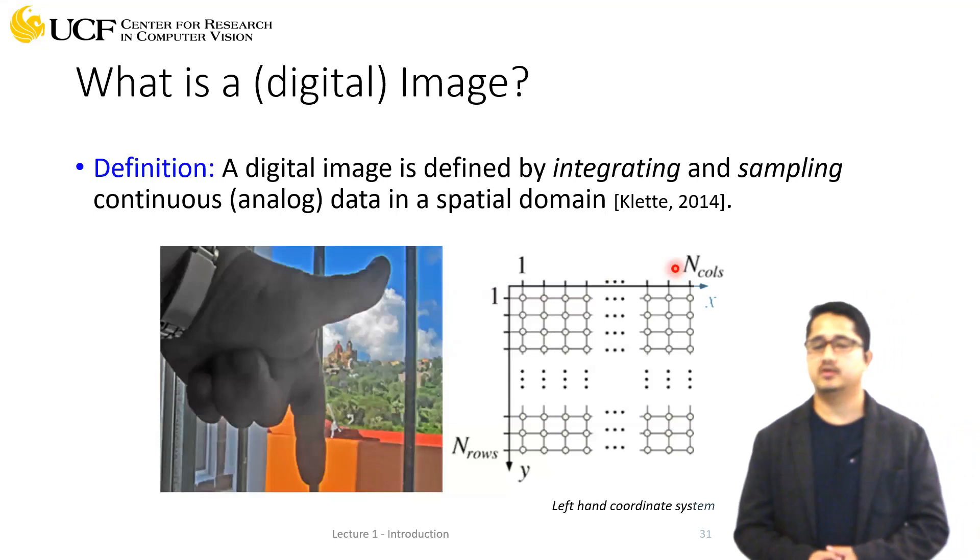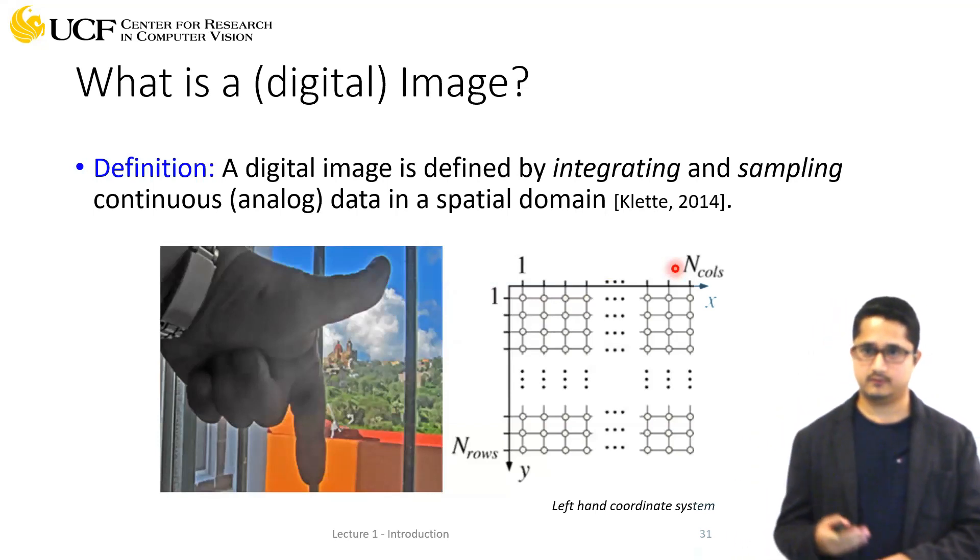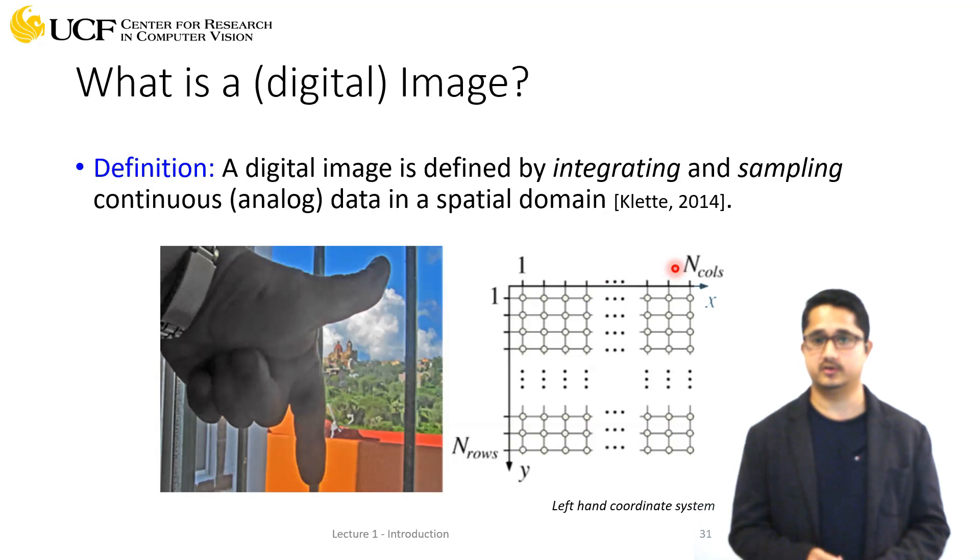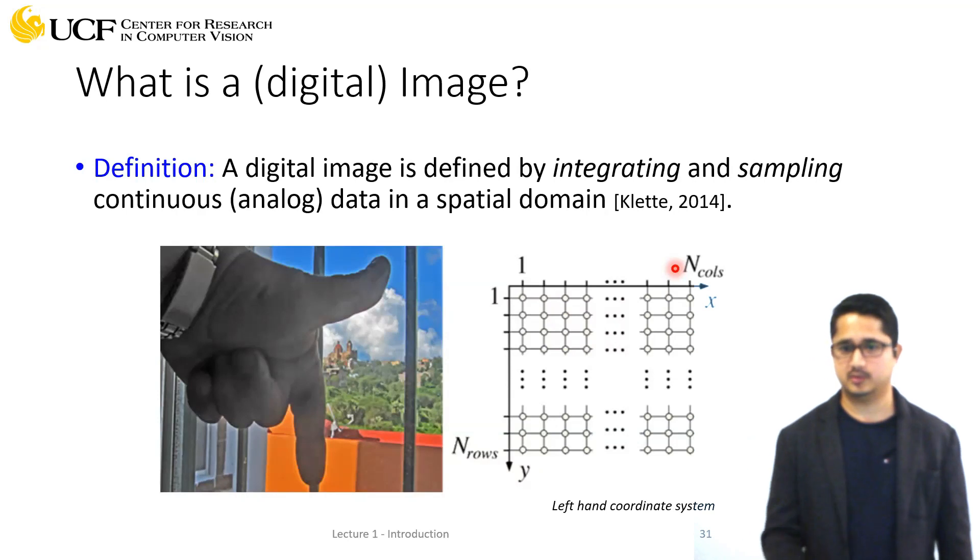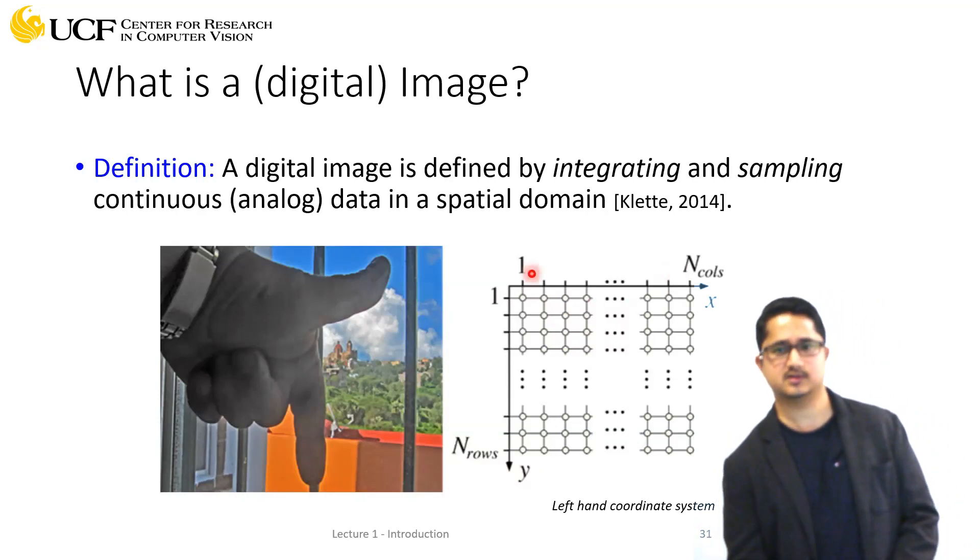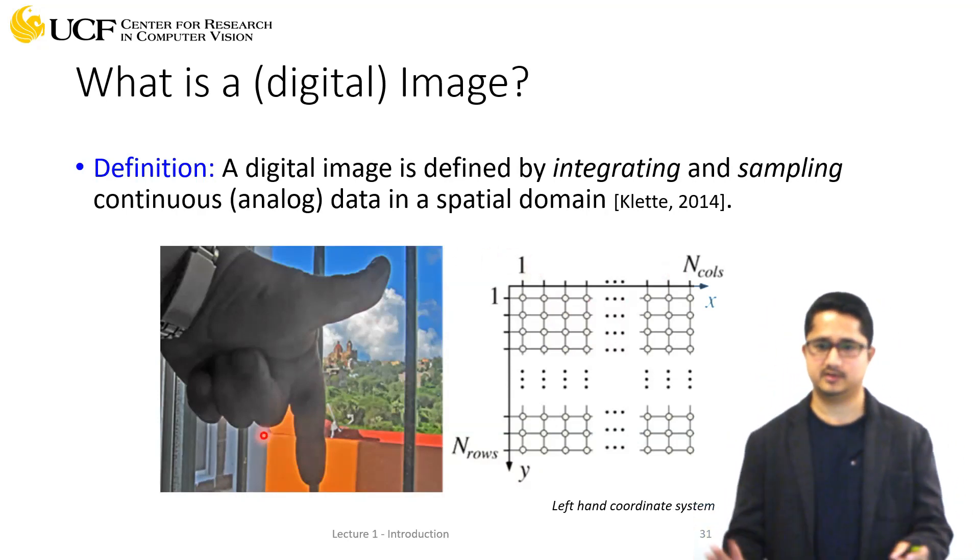Let's understand this representation of images used by computers, called digital images. It's a kind of sampling of a continuous signal present in the 3D world. For example, this image is taken from a real 3D world environment.